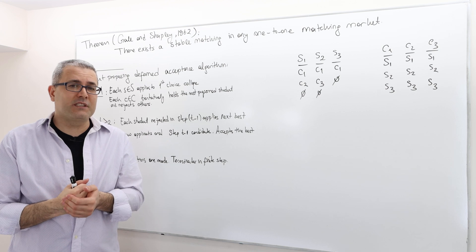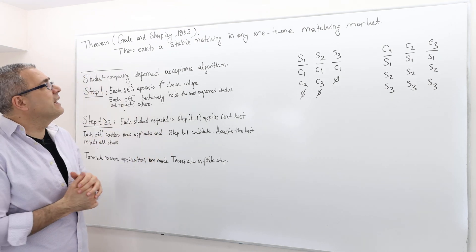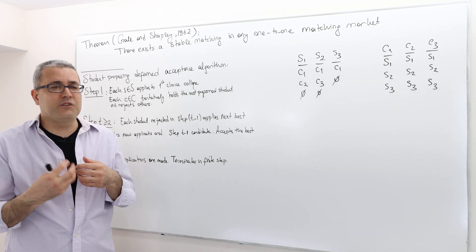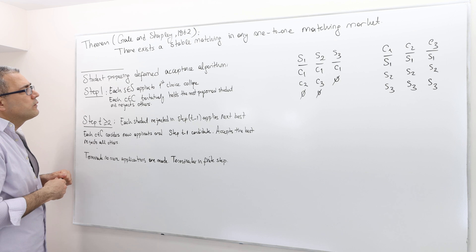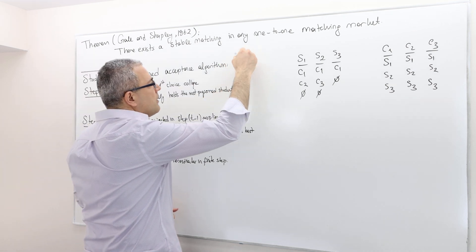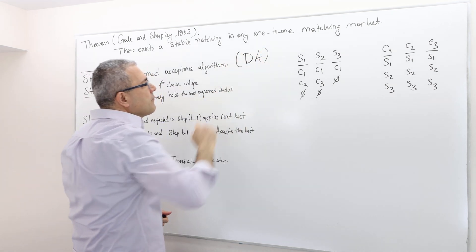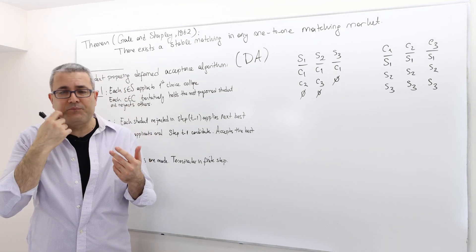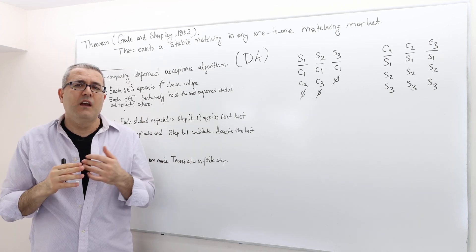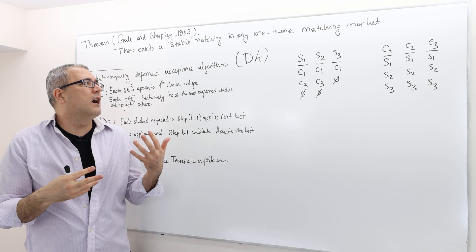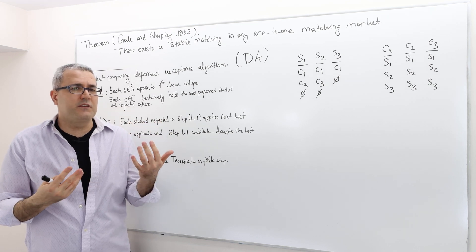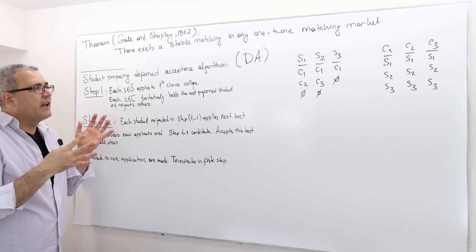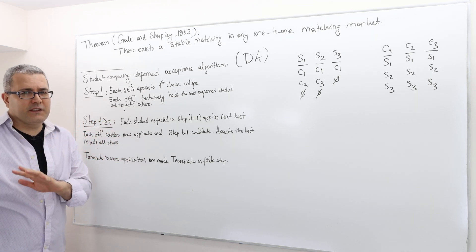How am I going to get you the stable matching? Gale-Shapley also proposes an algorithm to get this stable matching. It's called the Deferred Acceptance algorithm, or DA. Because there are two sides in the one-to-one matching — the student side and the college side — there are actually two kinds: student-proposing deferred acceptance and college-proposing deferred acceptance.